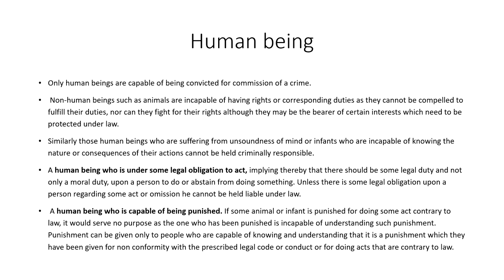The first essential ingredient is human being. It is only human beings that are capable of being convicted for commission of a crime. Non-human beings such as animals are incapable of having rights or corresponding duties, as they cannot be compelled to fulfill their duties nor can they fight for their rights. Because animals lack a moral agency — they do not know what is right and what is wrong — you cannot hold them responsible for a wrong committed by them. For example, if your pet dog bites someone, we cannot put that dog on trial or hold it criminally responsible. However, there is a legal obligation on you to handle your pet carefully, so if your pet bites someone, you can be held liable under the Indian Penal Code for negligent handling of an animal.